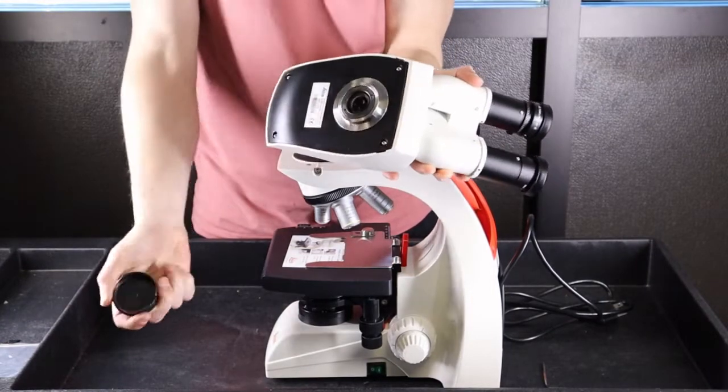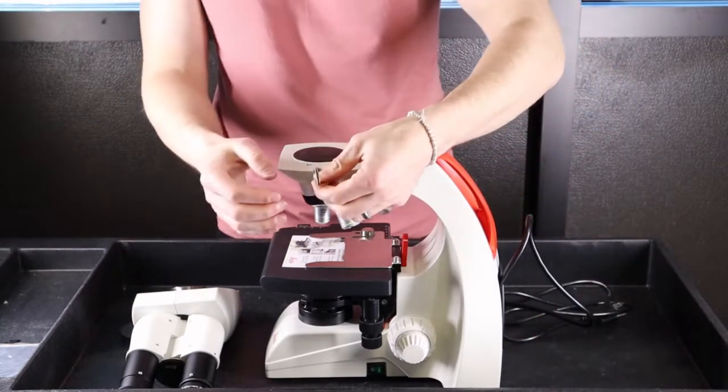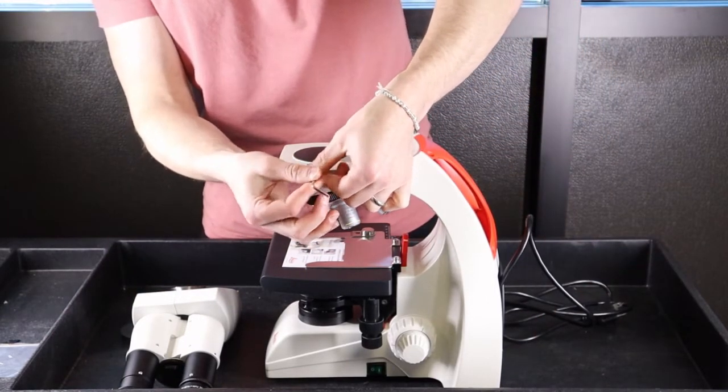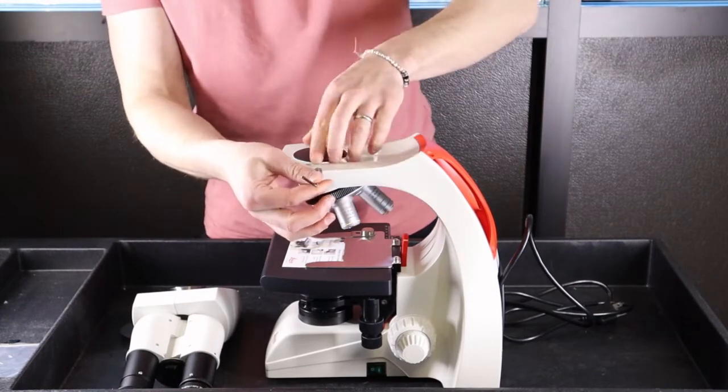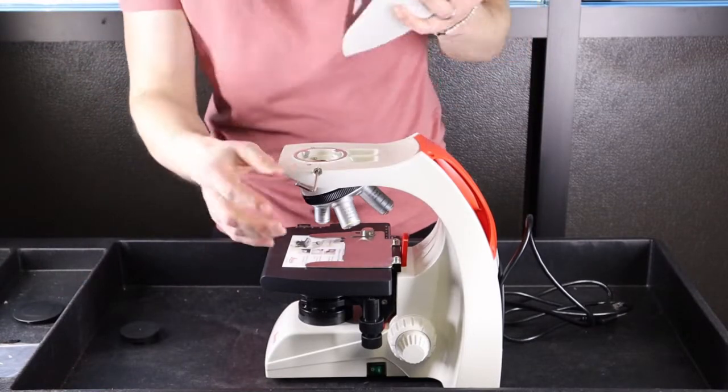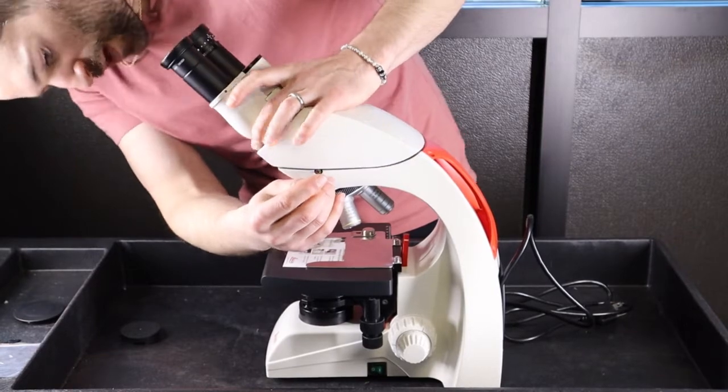Remove the black cap from the head. Take the Allen key and loosen the screw on the side here. Remove the black cap there. Take the head and hold onto it. Rest it on the flange.